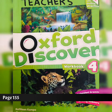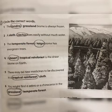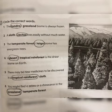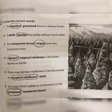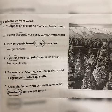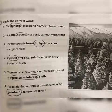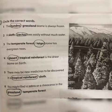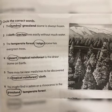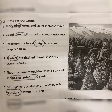Now take out the workbook and open page number 155, Exercise B. Again we have to circle the correct word. Sentence number one: the tundra slash grassland biome is always frozen. Which biome was frozen? It was tundra, so circle tundra in sentence one. Sentence two: a sloth slash cactus lives easily without much water. Sloth is an animal and it needs water to survive, so cactus is the correct option.